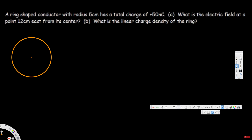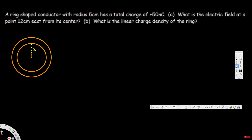We have a ring-shaped conductor. The radius is 5 centimeters — let's call this x for now. The charge is 50 nanocoulombs. What we're going to do is take a small segment — let's call this small segment ds. The charge inside this small segment is a positive charge, and the charge of this small segment is going to be dq.